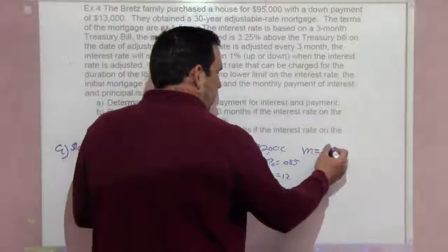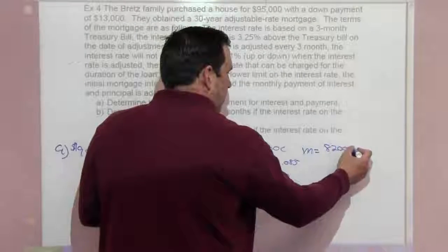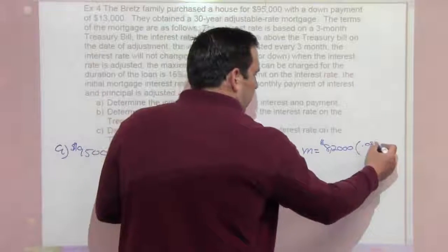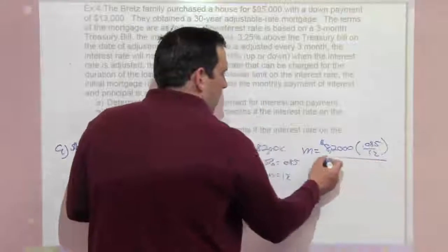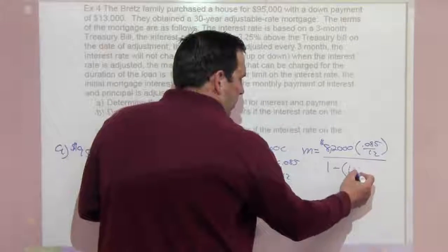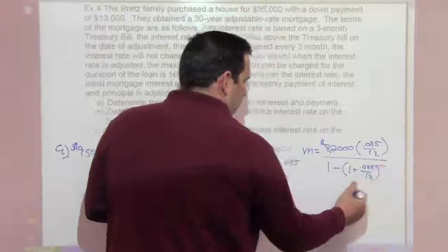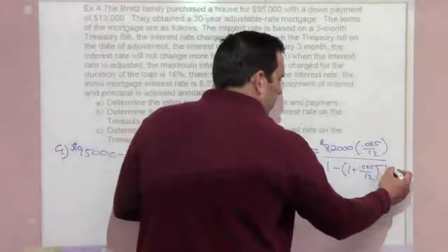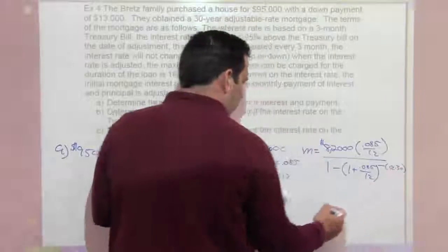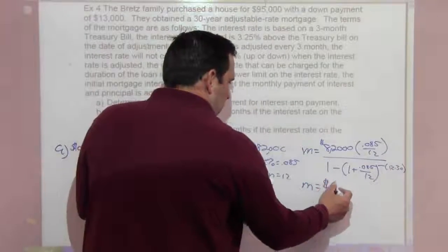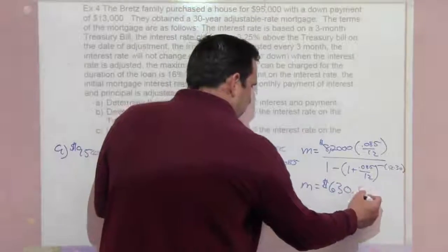So our payment is going to be $82,000 times .085 over 12 divided by 1 minus quantity 1 plus .085 over 12 to the negative of 12 times 30, and that payment comes out to be $630.51.